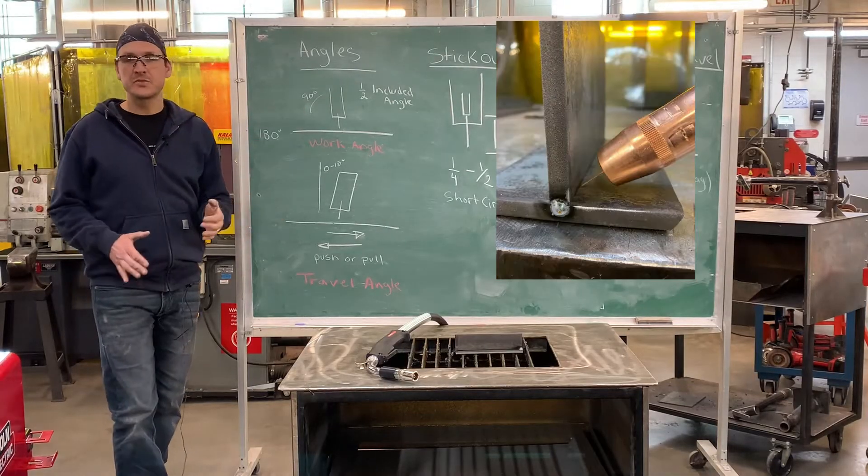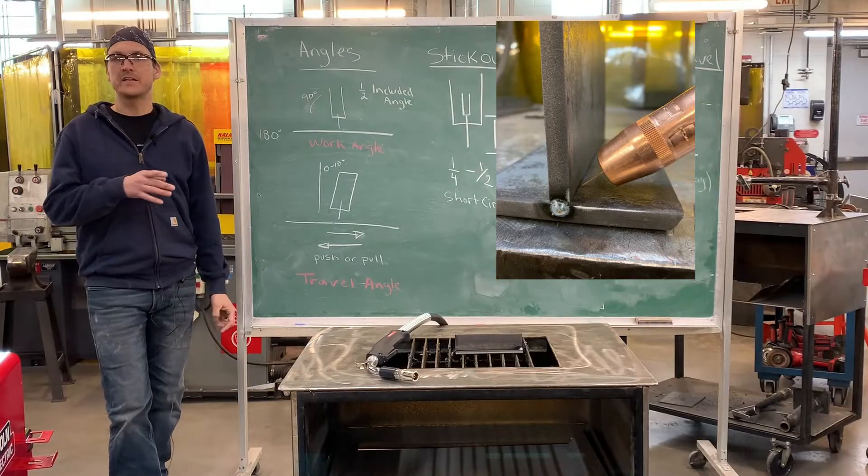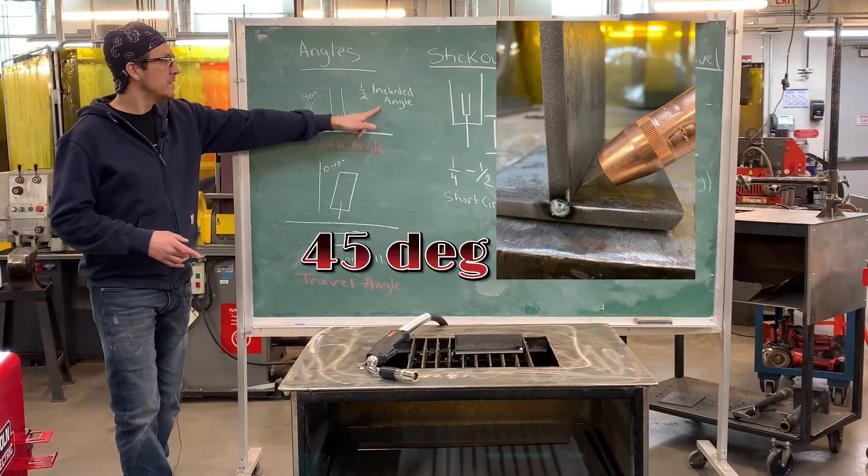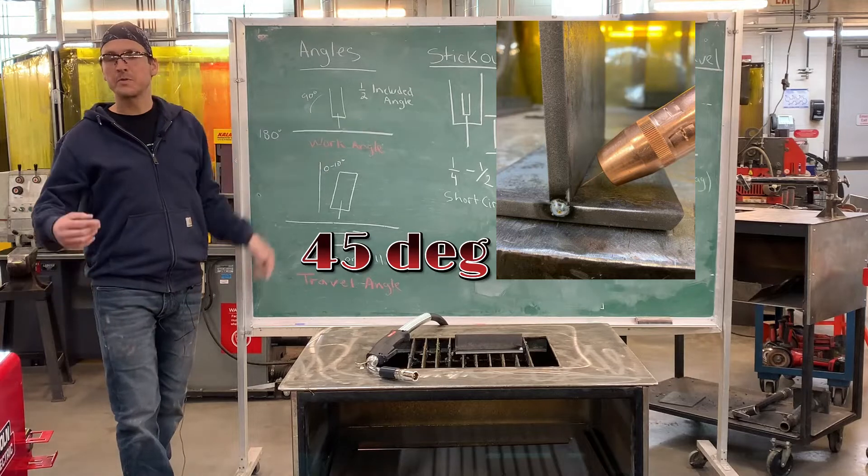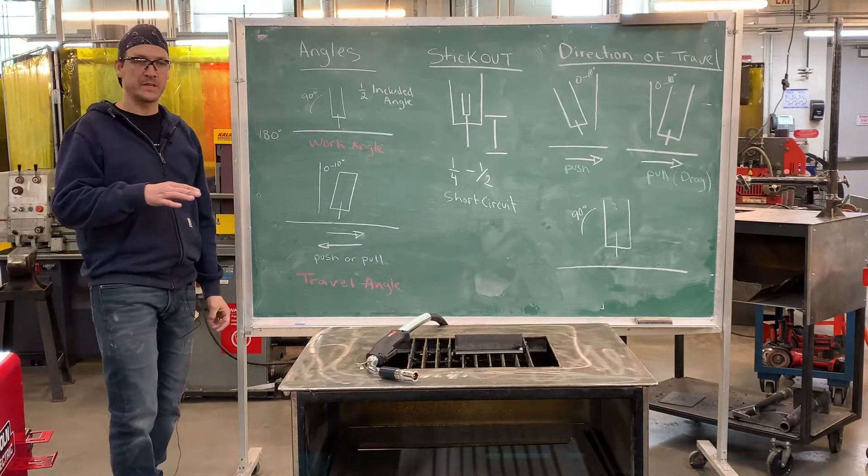If you're welding a T joint or lap joint, the included angle is now 90 degrees. So the rule of thumb is still half the included angle—we would come in at 45 degrees, and we'll demonstrate that later when we get into welding.